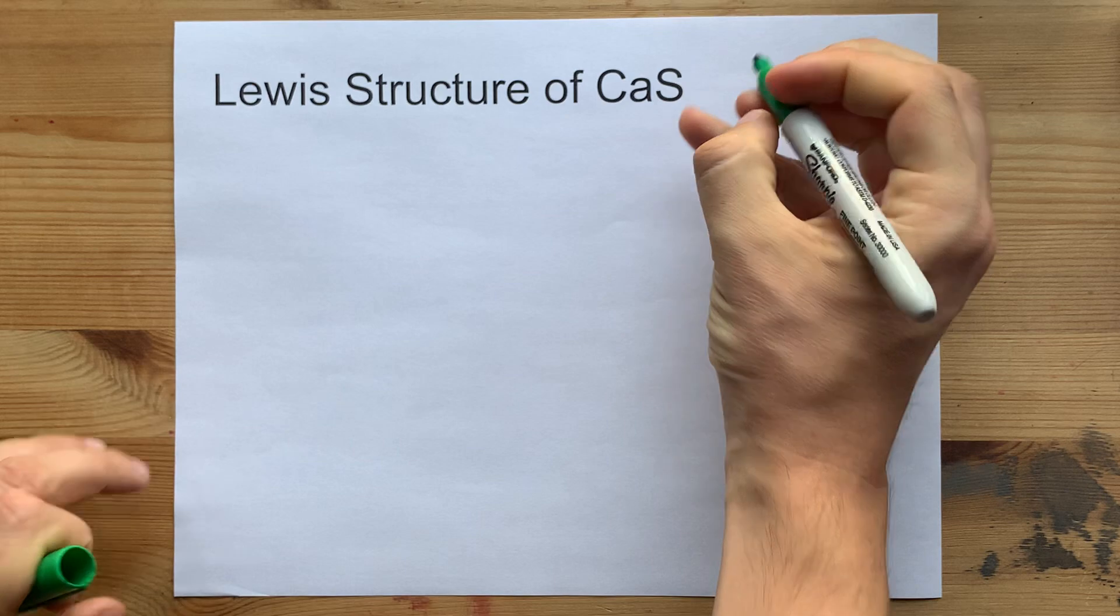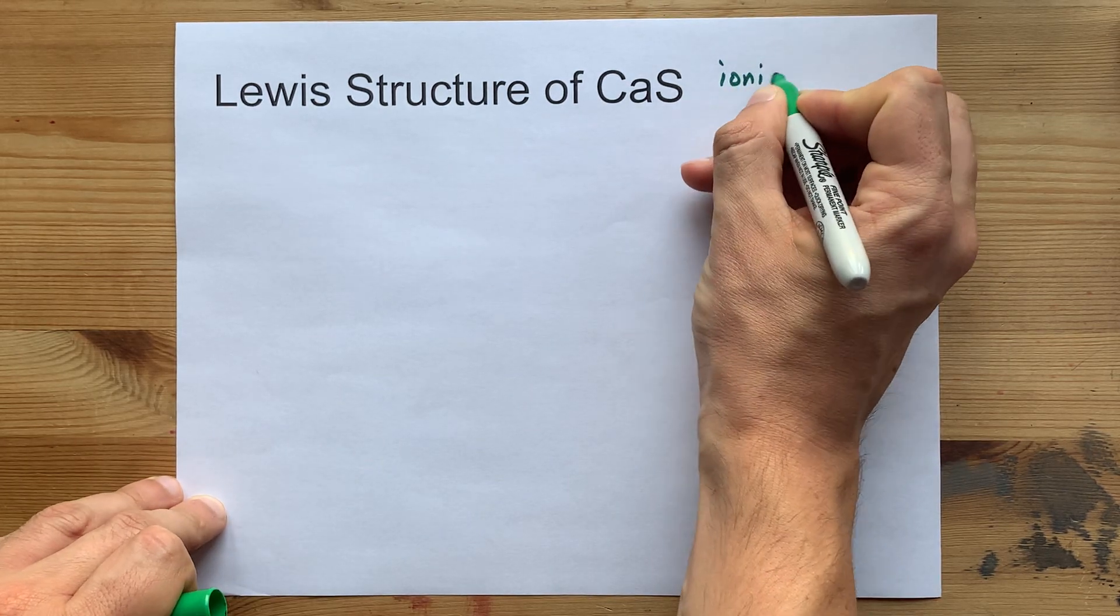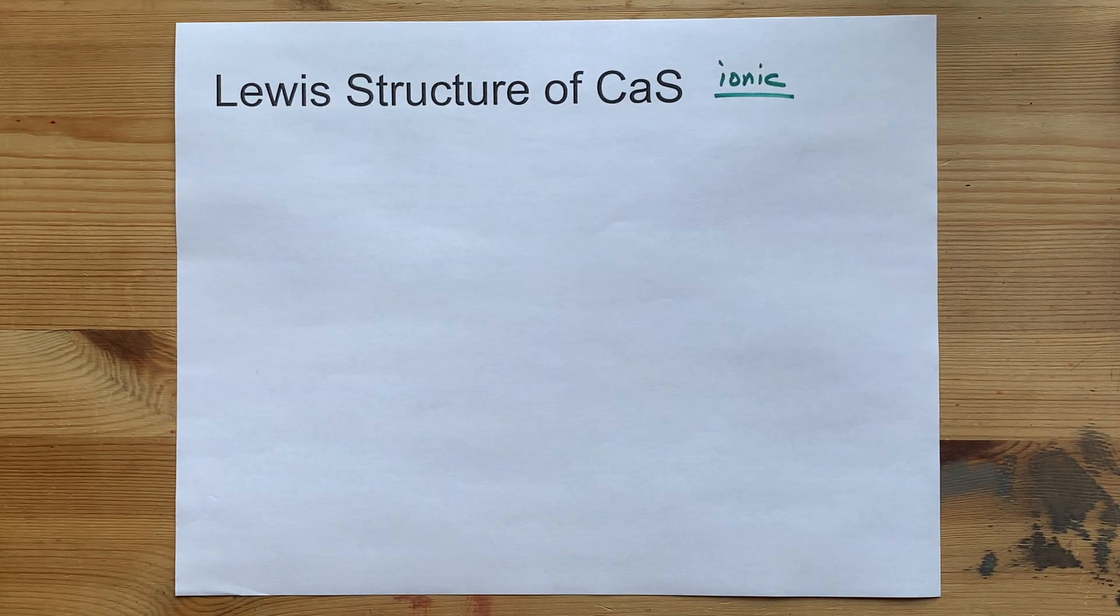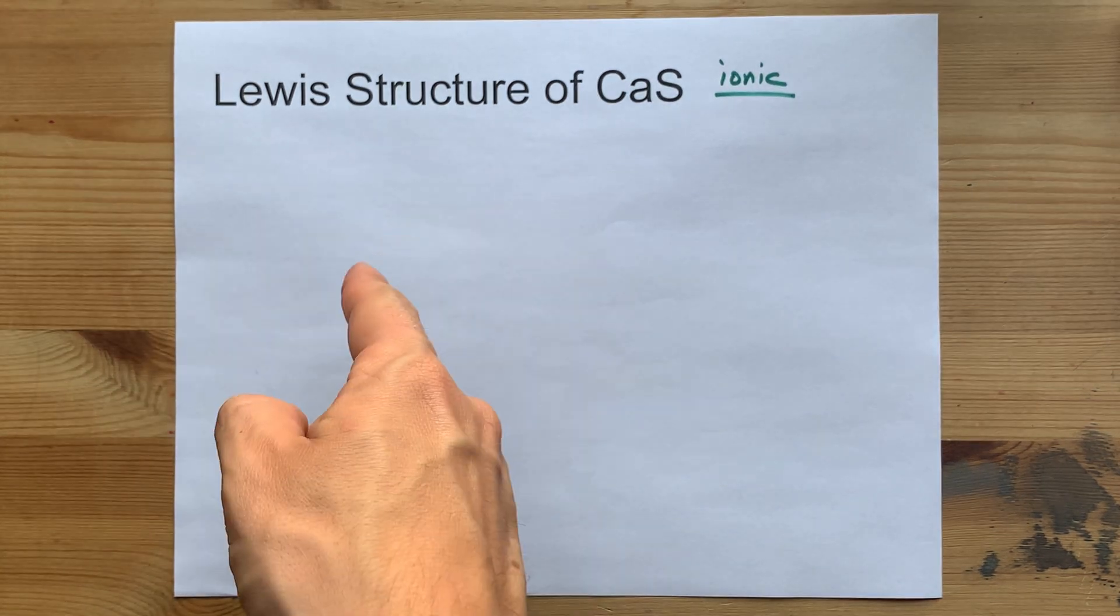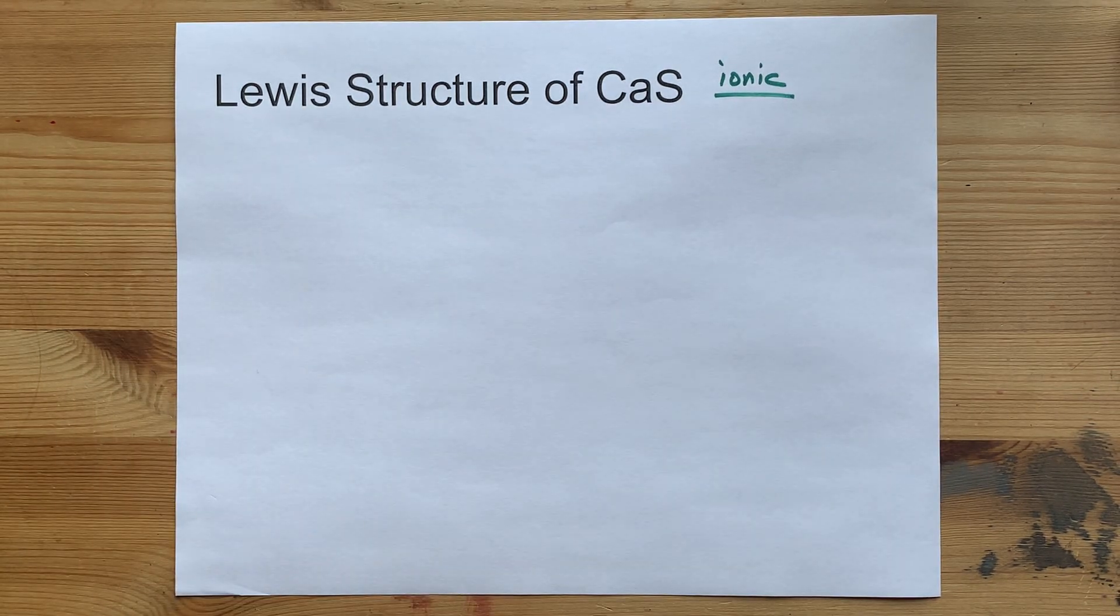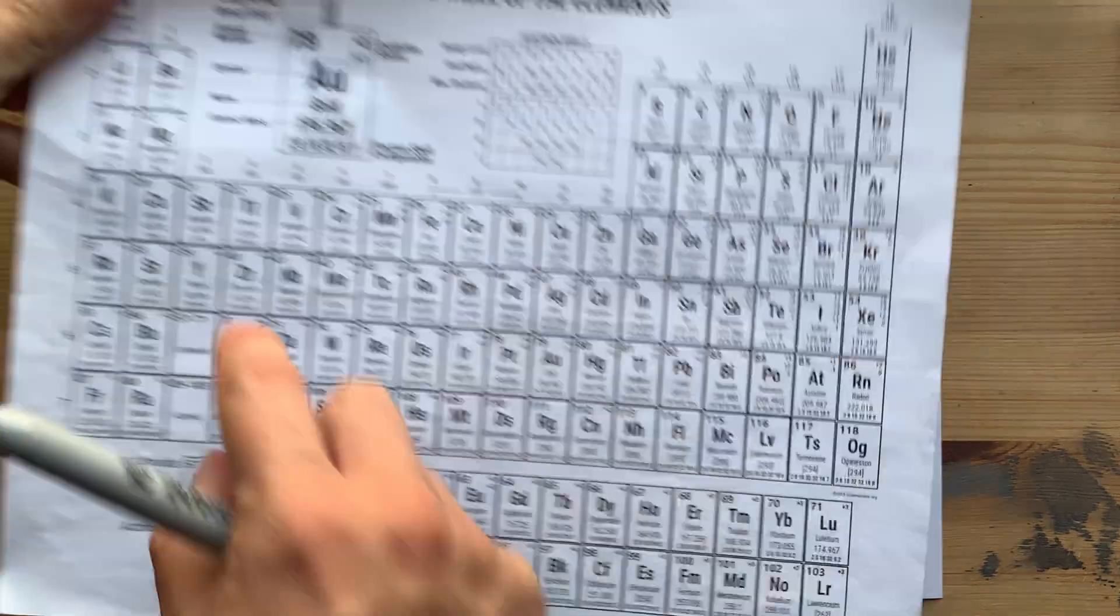A metal and a nonmetal will combine to give you an ionic compound. That means that there's a transfer of electrons from the metal to the nonmetal. Let's demonstrate that.